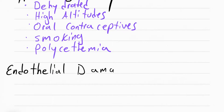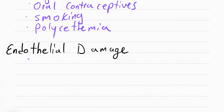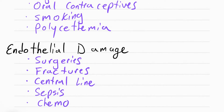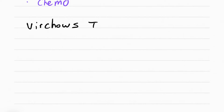The last thing that increases the risk of getting a DVT is endothelial damage to the vessel. This includes surgeries, fractures, central line insertions, sepsis, and chemo. When these things cause damage to the endothelium of the vessel, it causes platelets to become activated and get stuck together, leading to the possibility of a DVT.